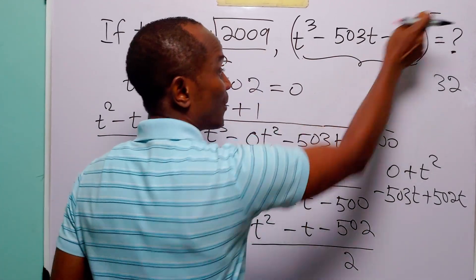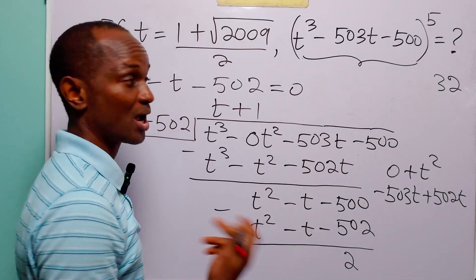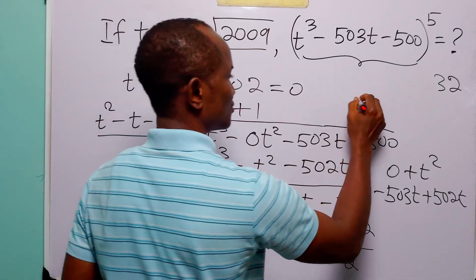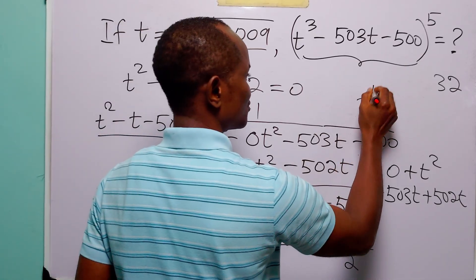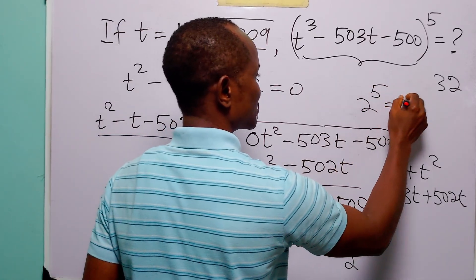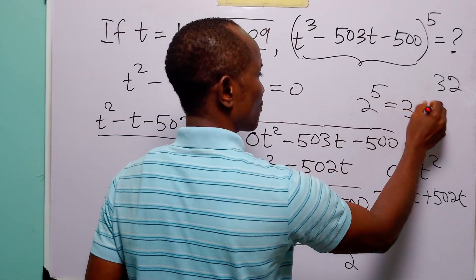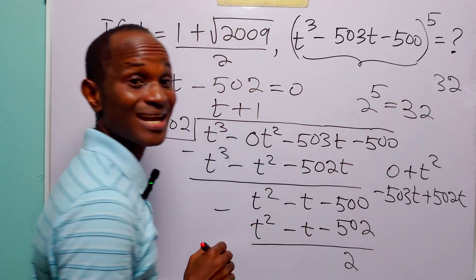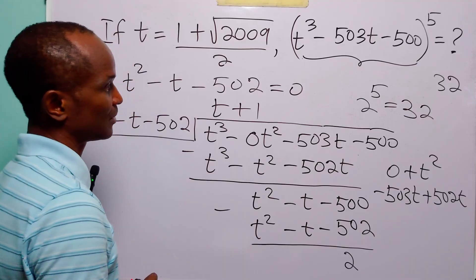So to find the value of this expression, we simply raise 2t — evaluated at our value of t which gives 2 — to the power of 5. And of course, 2 raised to the power of 5 is equal to 32.